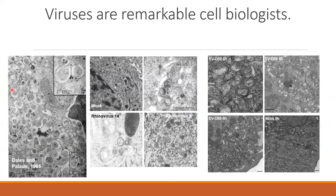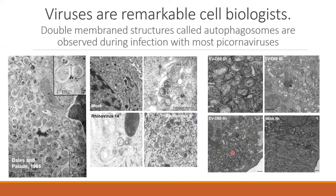Viruses are remarkable cell biologists — very good at infecting cells and changing them. An ordinary cell has a plain-looking, open cytoplasm, but when you infect these cells you get a group of vesicles. This picture from 1965 of a polio-infected cell shows weird vesicles that sometimes look like horseshoes and sometimes like donuts. We see those same kinds of vesicles in rhinovirus-infected cells, poliovirus-infected cells, and enterovirus D68-infected cells.